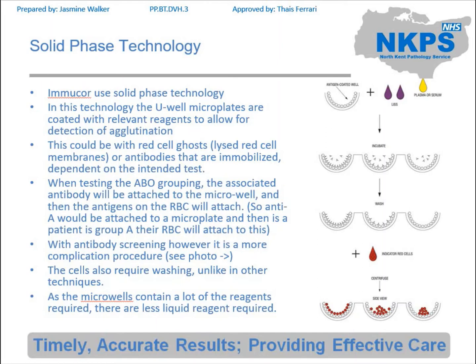Going through the picture, you can see at the beginning you've got a well coated with antigens that are fixed to the inside of that well. You then add LIS — a low isotonic solution — and the patient's plasma. The LIS just reduces the distance between the antigens and antibodies so it's easier for them to bind. This will then be incubated. In the picture, furthest to the left, you've got lots of antibodies denoted by the Y shapes that are attached to the antigens — that would be a positive reaction.